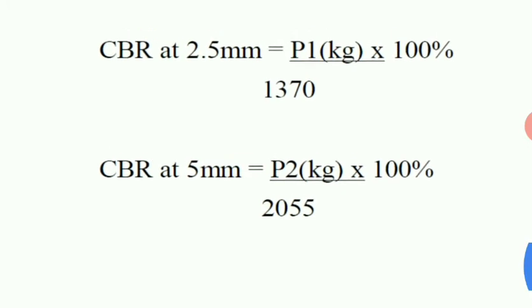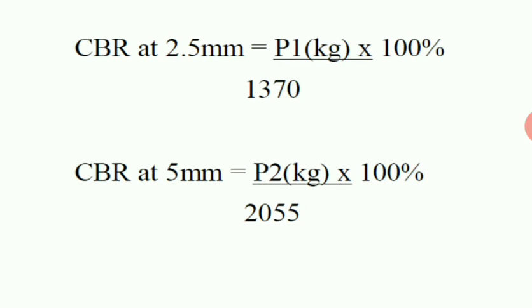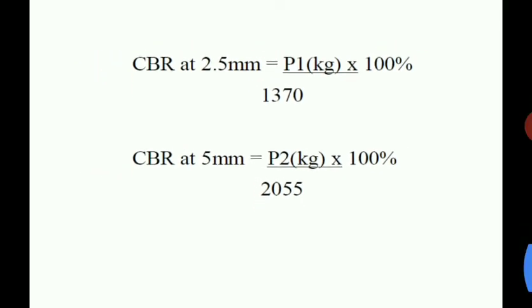We then consider the maximum CBR value — either at 2.5 mm or 5 mm penetration, whichever is higher. In most cases the maximum value occurs at 2.5 mm. If the maximum is at 5 mm, as per expert suggestion we conduct the experiment again, and only if we again get the maximum at 5 mm do we accept that value.